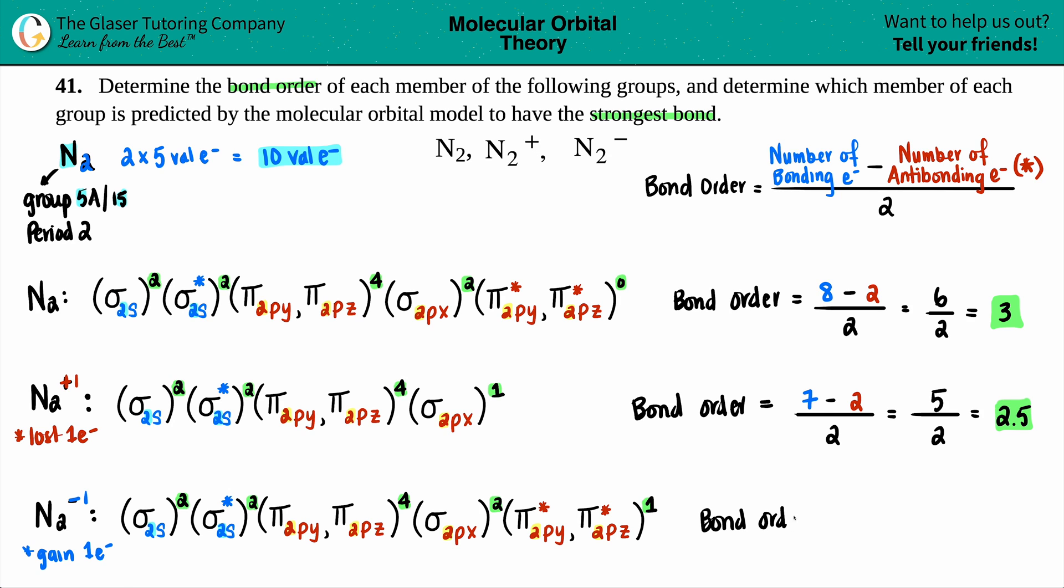We can go straight to the bond order. Something minus something divided by two. Look for those antibonding first. Here's two, here's one, so antibonding is a total of three. Bonding: two, four, so that's a total of six, seven, eight. Eight minus three is five. Five divided by two is 2.5.